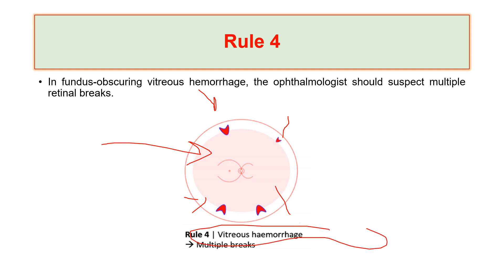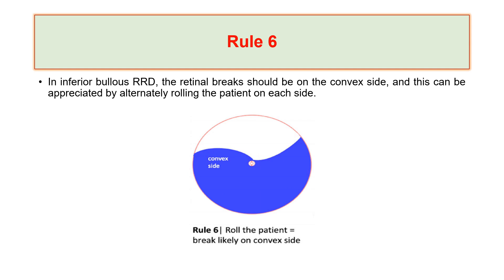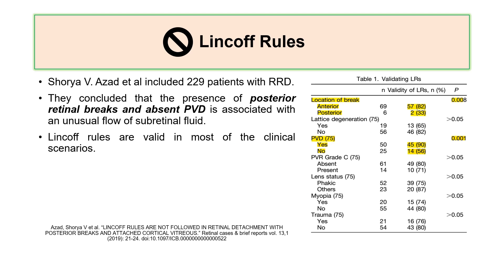Rule 4: if vitreous hemorrhage leads to retinal detachment with no view to the fundus, suspect multiple breaks causing this detachment. Rule 5: in rhegmatogenous retinal detachment in the posterior retina but limited inferiorly in the periphery, suspect the break is in the posterior pole. Rule 6: in inferior polus rhegmatogenous retinal detachment, there will be a convex side and a concave side, and the break is usually on the convex side.